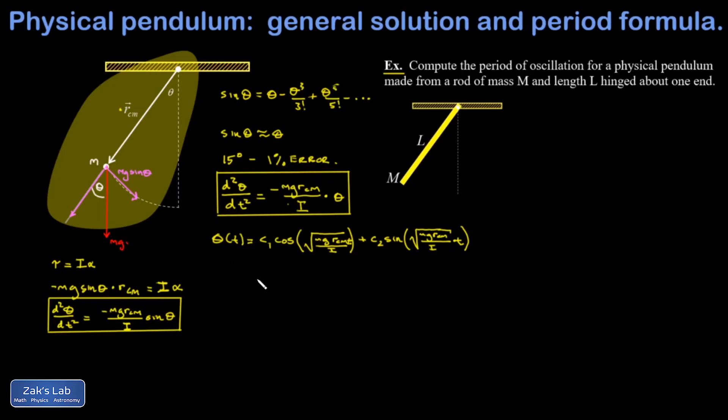In this problem, I'm purely just interested in the period of oscillation. So these functions are both periodic with the same period. And that period of oscillation is 2 pi divided by the coefficient of little t. So 2 pi times the reciprocal. And I arrive at a formula for the period of oscillation of a physical pendulum.